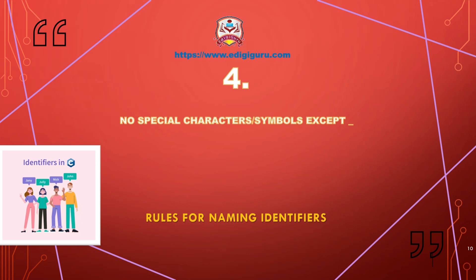Special characters are also not allowed in identifier names. We cannot use any special character except underscore. So characters like dollar, hash, comma, percent, or any other special characters are not allowed — only the underscore is the exception.